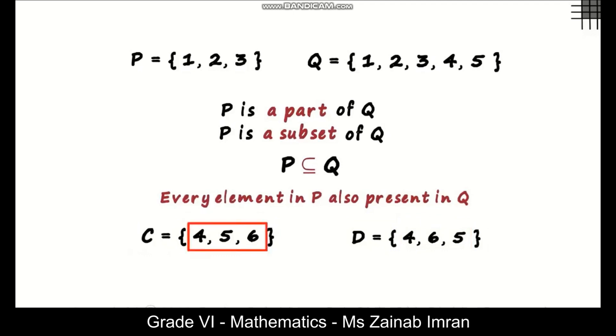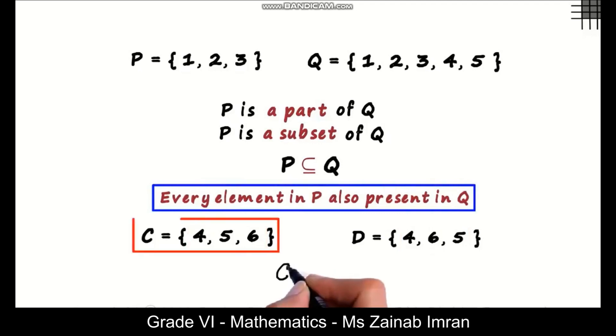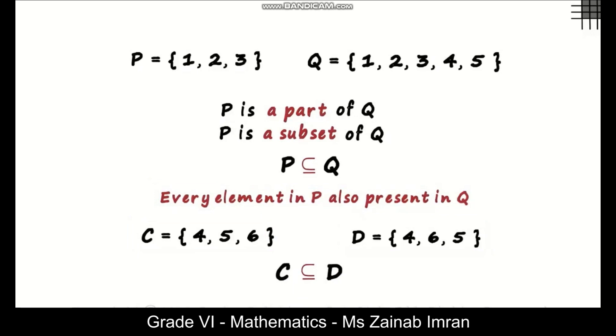But every element in set C is also present in set D. Based on the definition, we can say that set C is a subset of set D. This also tells us something more. It tells us that every set is a subset of itself.